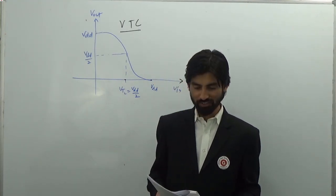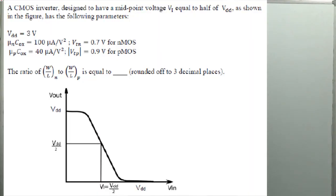Let us read the problem first. A CMOS inverter is designed to have a midpoint voltage V1 equal to half of VDD, as shown in the figure. The given parameters are: VDD = 3 V, μn·Cox = 100 μA/V², VTN = 0.7 V for NMOS, μp·Cox = 40 μA/V², and VTP = 0.9 V for PMOS. The ratio of W/L for NMOS to W/L for PMOS is to be found, answered to three decimal places.